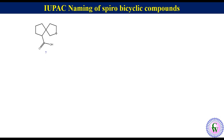Compound 7, the last example of this video: the two rings are again of the same size. The right-side ring has a heteroatom — oxygen — while the left-side ring has a carboxylic group. Since the ring with a heteroatom is preferred over the ring with a functional group for numbering, the right-side ring will be numbered first. The numbering will be 1, 2, 3, 4, 5, 6, 7, 8 and 9.